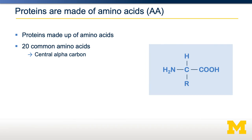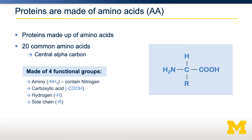Proteins are made up of 20 different amino acids. The structure of an amino acid in general has an amino group, a carboxyl group, and a side chain shown as R. The side chain is what differs between the different amino acids. There are 20 different side chains.